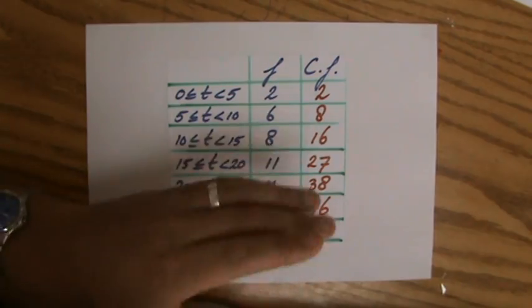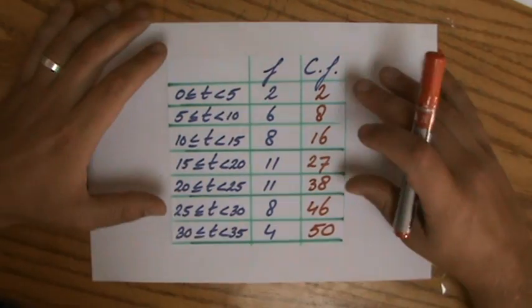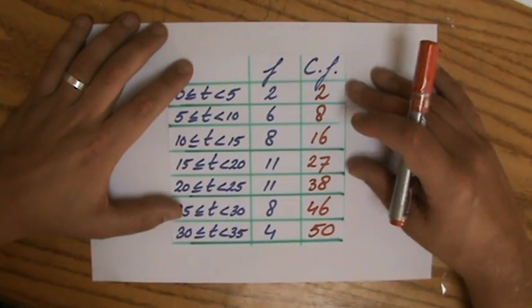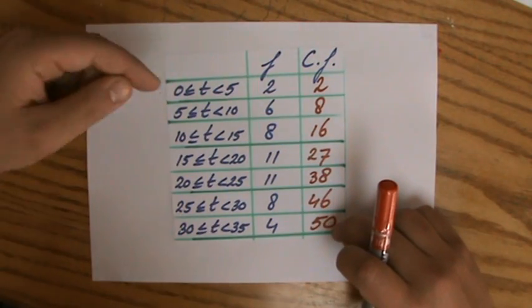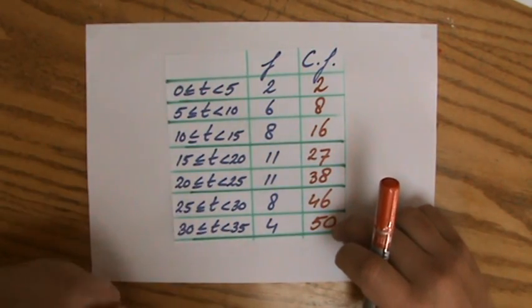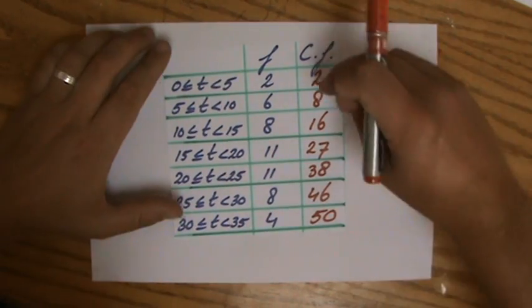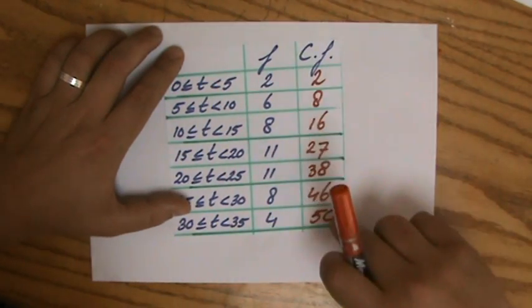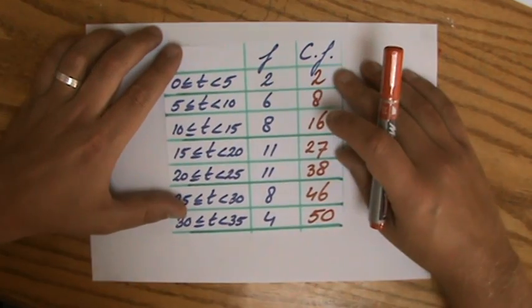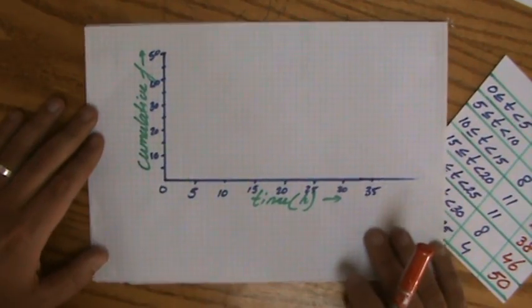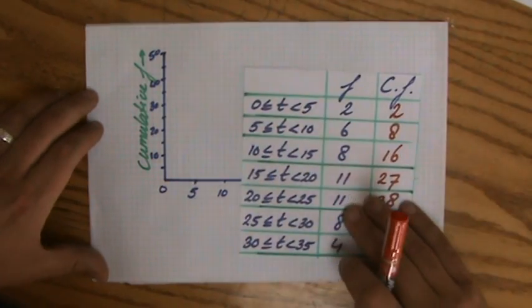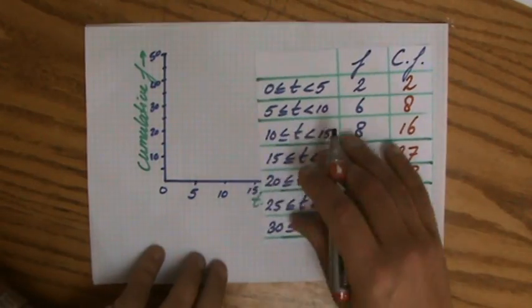27 plus 11 is going to be 38, 38 plus 8 is 46, and 46 plus 4 is 50. Then I ask you the question: How many students did I ask how long it takes for them to walk home? In total, I indeed asked 50 students. So 50 students take between zero and 35 hours to walk home. This is what we call cumulative frequency: adding the frequencies as we go along.